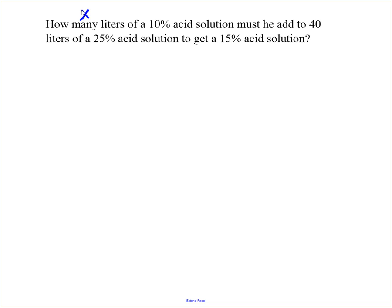We're going to write our equation in terms of the amount of acid. So if we got 10%, that's 0.1 times x. That's how much acid we're adding. It's not how much solution we're adding. We're adding x liters of solution, but then we multiply by 10% or 0.1 to find out how much actual acid we're adding.